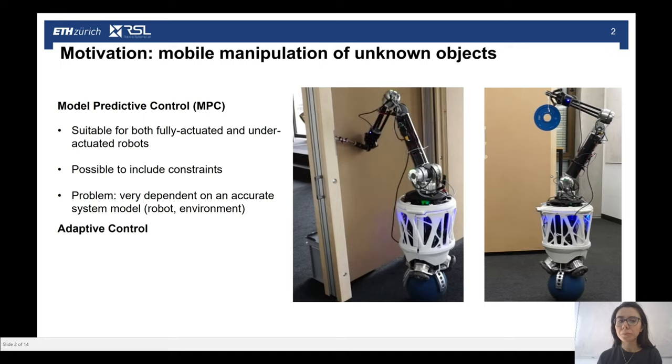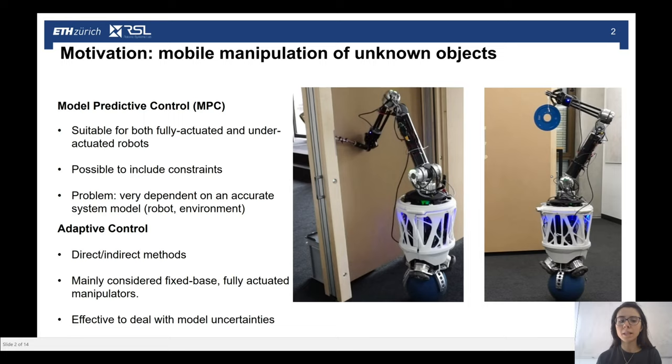To mitigate this dependency, we have looked into the literature of adaptive control. Adaptive controllers can be studied in a direct form or in an indirect form, according to whether the goal of the parameter's identification is oriented towards achieving the convergence of the tracking error or the estimations of the parameters in closed loop. So far, adaptive controllers have mainly considered fixed-based, fully-actuated manipulators, and they are effective to deal with model uncertainties, and thus are good candidates to be combined with the model-based approach.